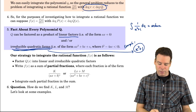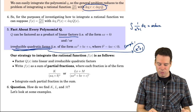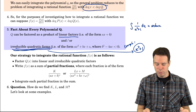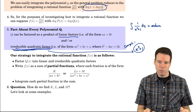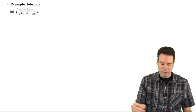Here's our strategy: first factor the denominator into linear and irreducible quadratic factors, then write the original integrand as a sum where each denominator is one of those factors raised to a power, up to the power appearing in the original denominator. For irreducible quadratics, the numerators will be linear. The question is how to find K, L, and M — the unknowns in the new numerators. Let's look at a bunch of examples.